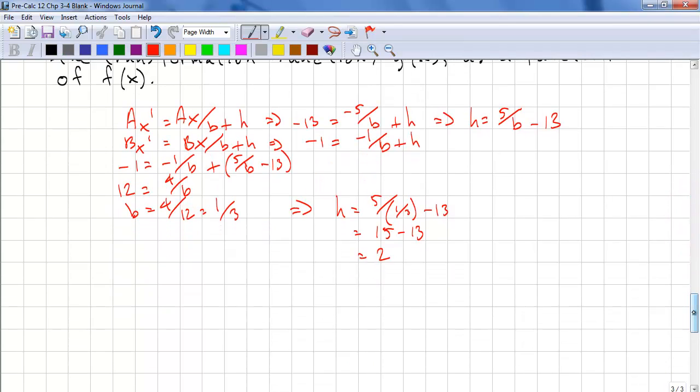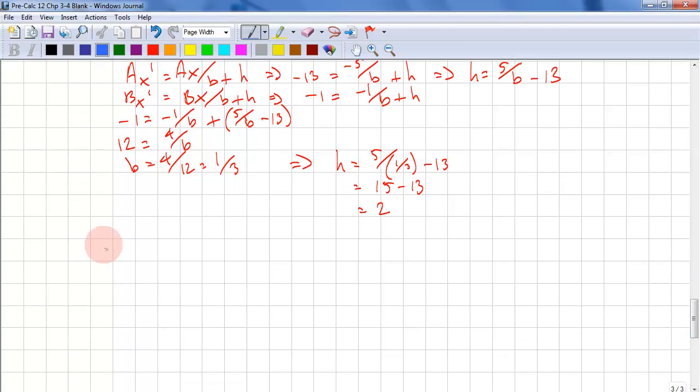Now we need to solve for a and k. So use the formulas. Ay' = a times Ay + k. And we get 17 = a times -6 + k. So k = 6a + 17.